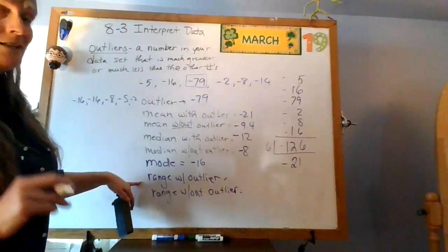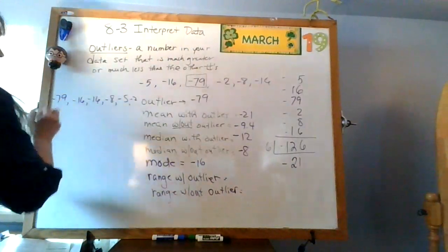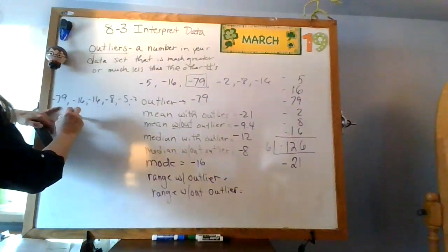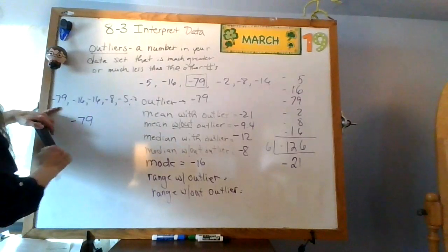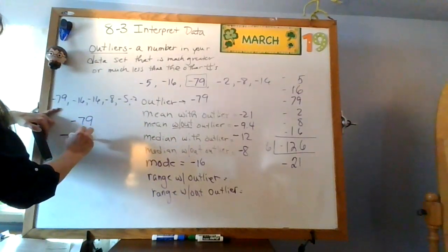All right, what's my range with the outlier? Now, here's where I want to go over this with you guys. So the lowest number here is negative 79. And then I'm going to subtract my negative 2.